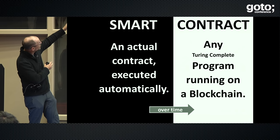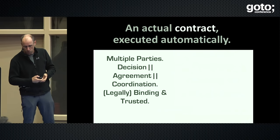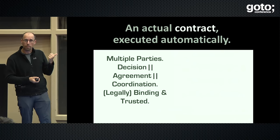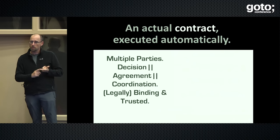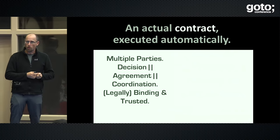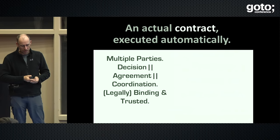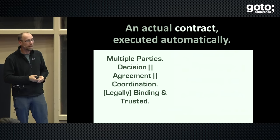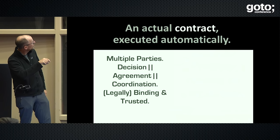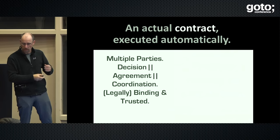I want to go back to the notion of smart contracts as a means of actually running contracts. A contract I would define as something where multiple parties collaborate in making a decision, an agreement, or coordinate something somehow, and then once they agree on the contract and execute it — meaning they sign it and make it go live — then this is legally binding and trusted. Of course, there are shades of grey depending on how you make the contract.